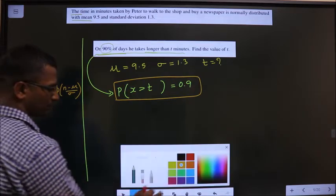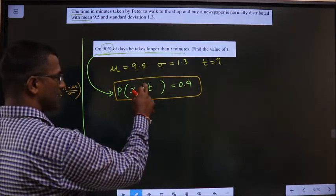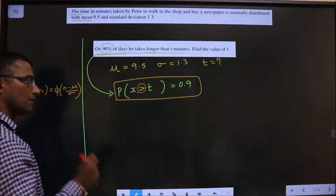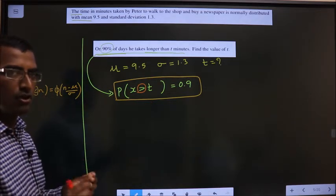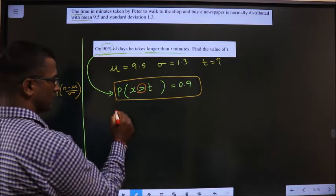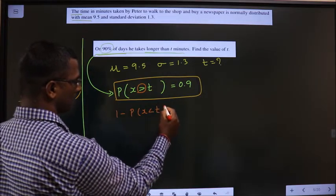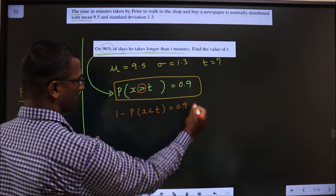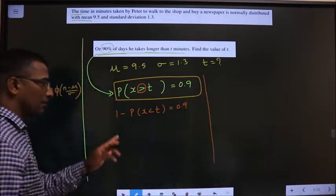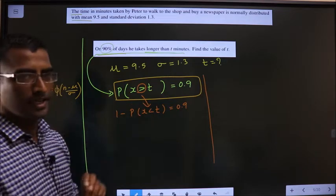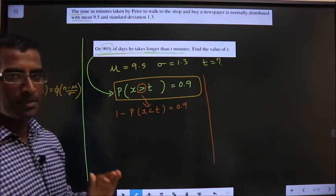Now, here you see, the symbol is greater than. So our focus is to make it less than. For that, the rule is we should do 1 minus. X less than T equal to 0.9. Clear? Whenever you do 1 minus, the inequality will change its direction.